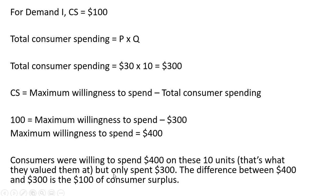In other words, consumers were willing to spend $400 on these 10 units. That's what they valued them at, but only spent $300, the actual level of spending. The difference between the two numbers is $100 of consumer surplus.